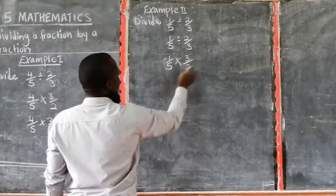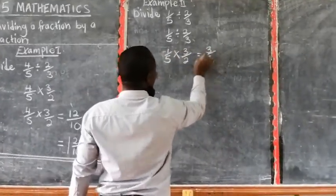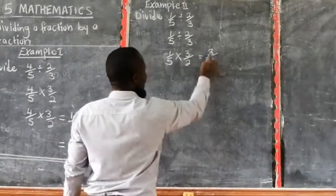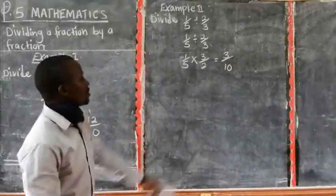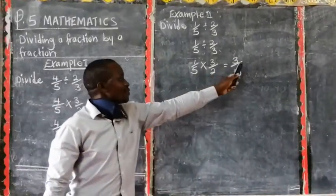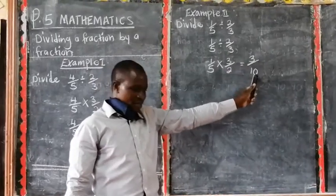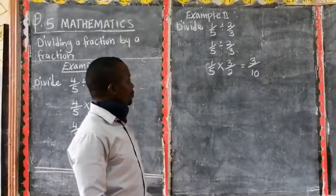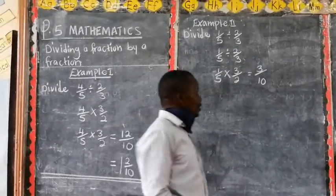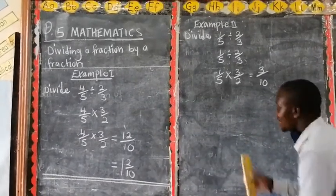Then we multiply from here. 1 times 3 is 3. 5 times 2 gives us 10. So the answer is 3 out of 10. So this one is different from this. Here you cannot divide because the top number is less than the bottom number. Therefore, this one is going to be a proper fraction. There is no need of dividing because it is impossible to do it.